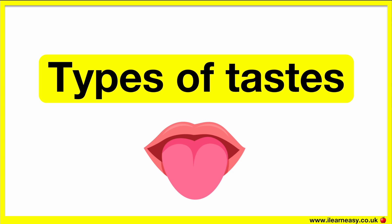What are the different types of tastes? Our tongue is a muscular organ. It has a rough surface consisting of small bumps, which help with gripping food when chewing and they contain taste buds.